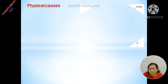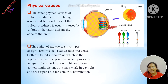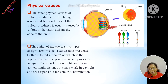The exact physical cause of color blindness is still being researched. But it is believed that color blindness is usually caused by a fault in the pathway from the cone cells to the brain. The retina of the eye has two types of cells: Number 1, rod cells; Number 2, cone cells. Rod cells work in low light conditions to help night vision, but cone cells work in daylight and are responsible for color discrimination.